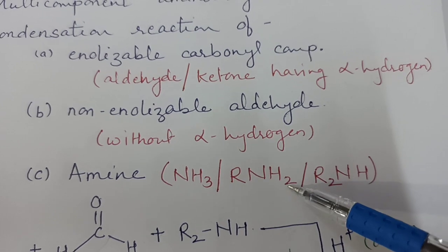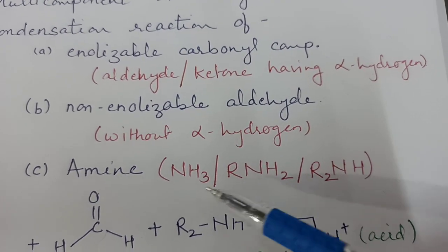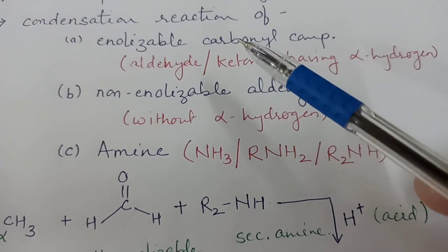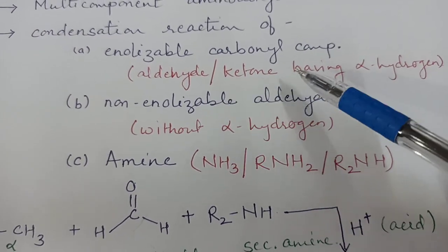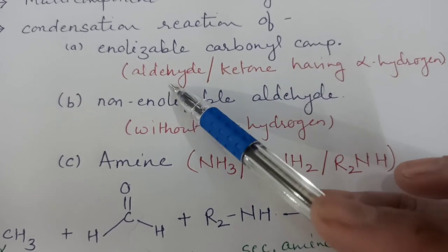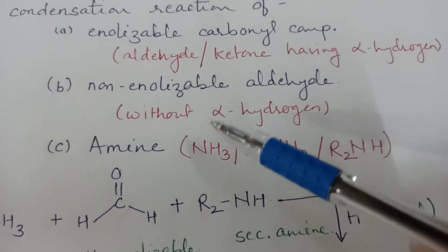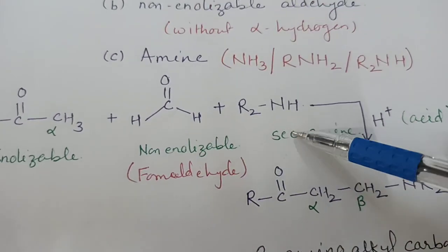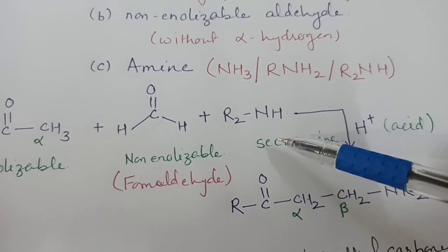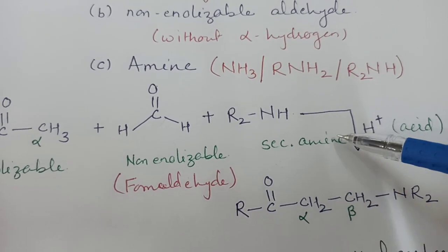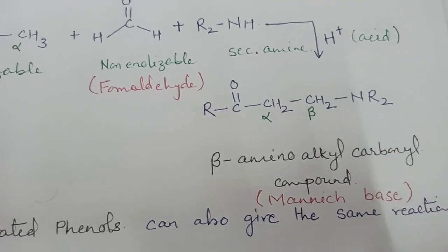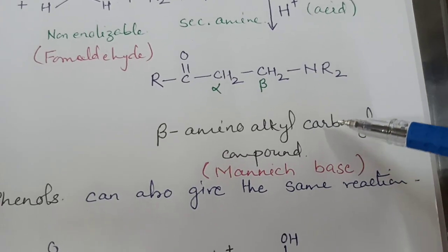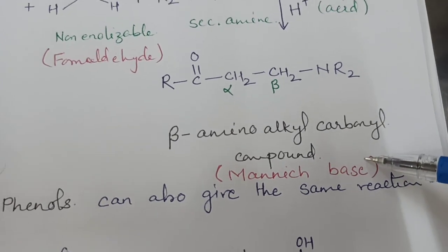The third component of the reaction can be ammonia, primary amine, or secondary amine. So this is a condensation reaction of an enolizable carbonyl compound — either aldehyde or ketone — with a non-enolizable aldehyde, generally formaldehyde, with primary or secondary amines or ammonia, in the presence of acid. It forms a beta-aminoalkyl carbonyl compound, also known as the Mannich base.